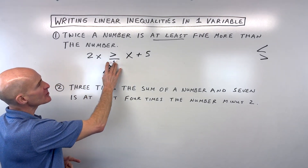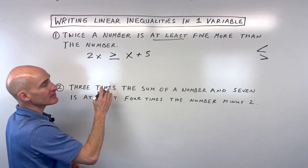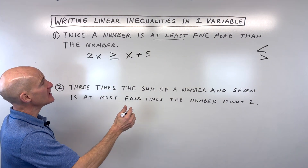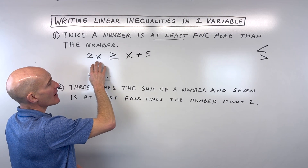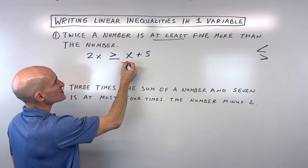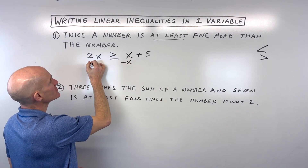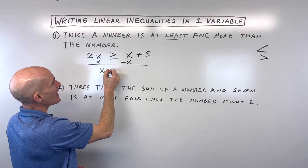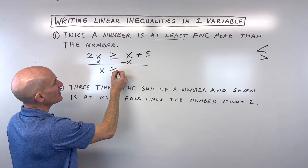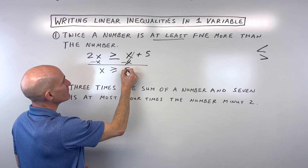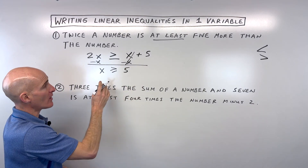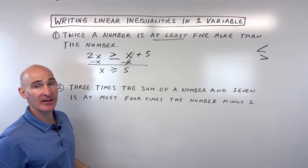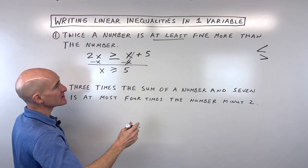Now we want to solve it — it's just like solving an algebra equation with an equal sign, but we want to get the variables on the left and the numbers on the right. So I'm going to subtract x from both sides: 2x minus x gives x, and these cancel, leaving x ≥ 5. So as long as our number is greater than or equal to five, it satisfies this inequality.